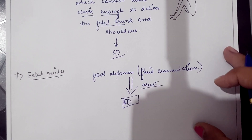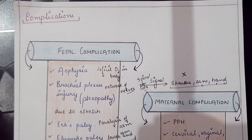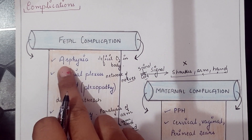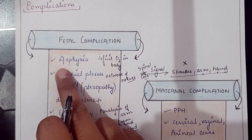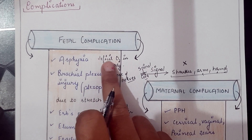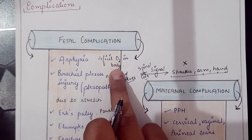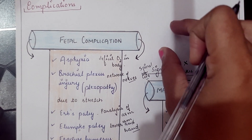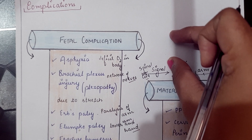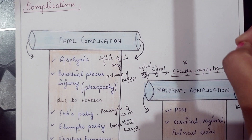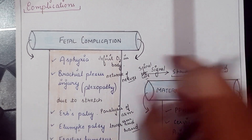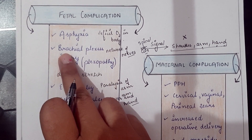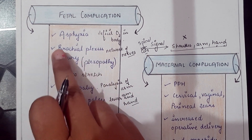Complications of shoulder dystocia include fetal and maternal complications. Under fetal complications, asphyxia is a condition where there is a deficit level of oxygen in the body due to abnormal respiration. The stuck shoulders prevent the baby from breathing, and the umbilical cord may also be squeezed, decreasing oxygen levels — this is known as asphyxia or asphyxiation.